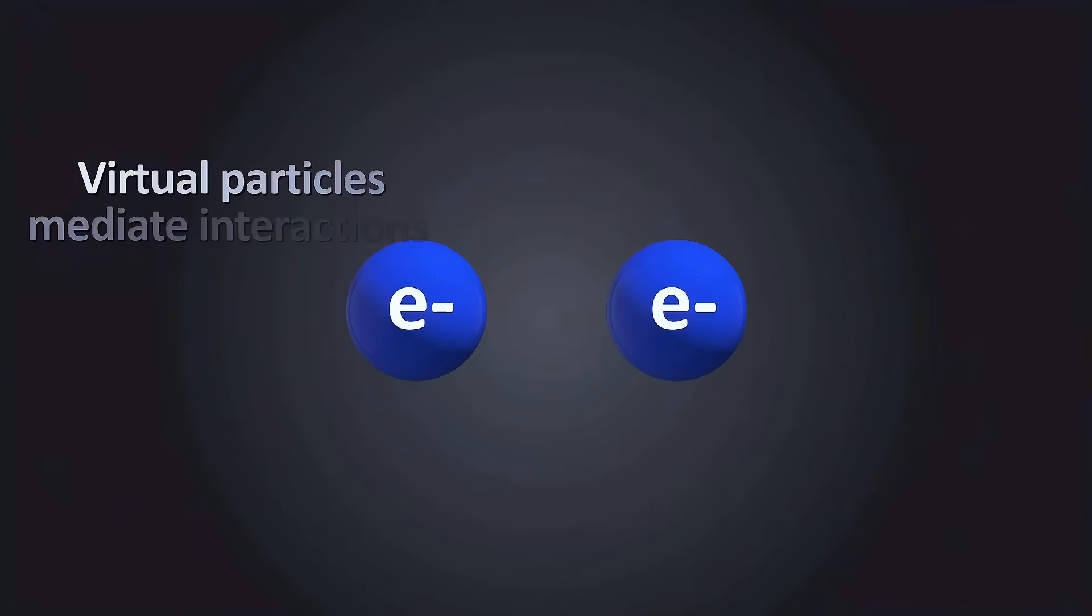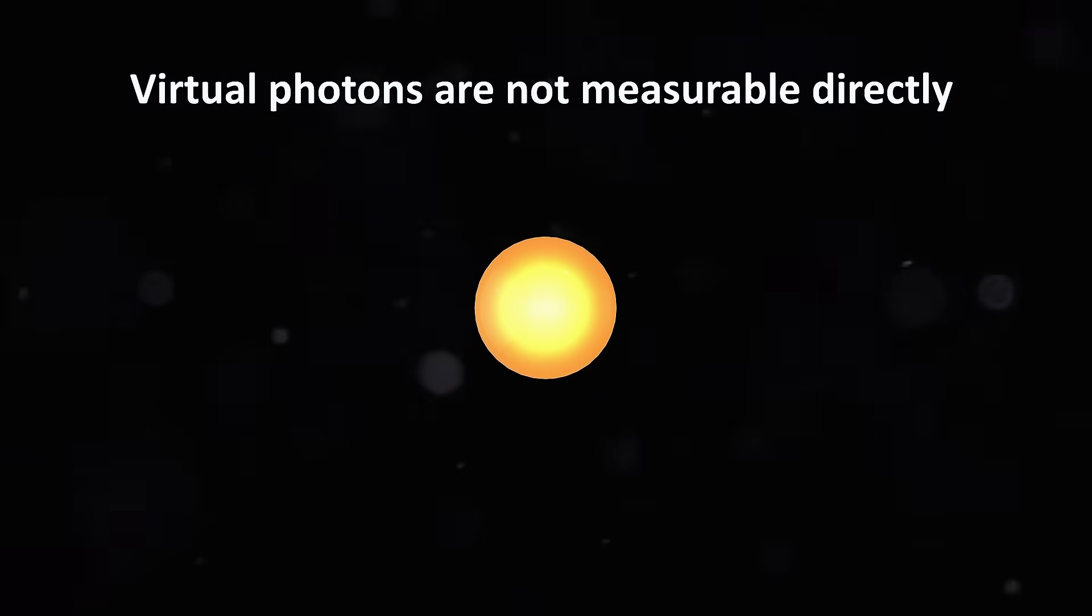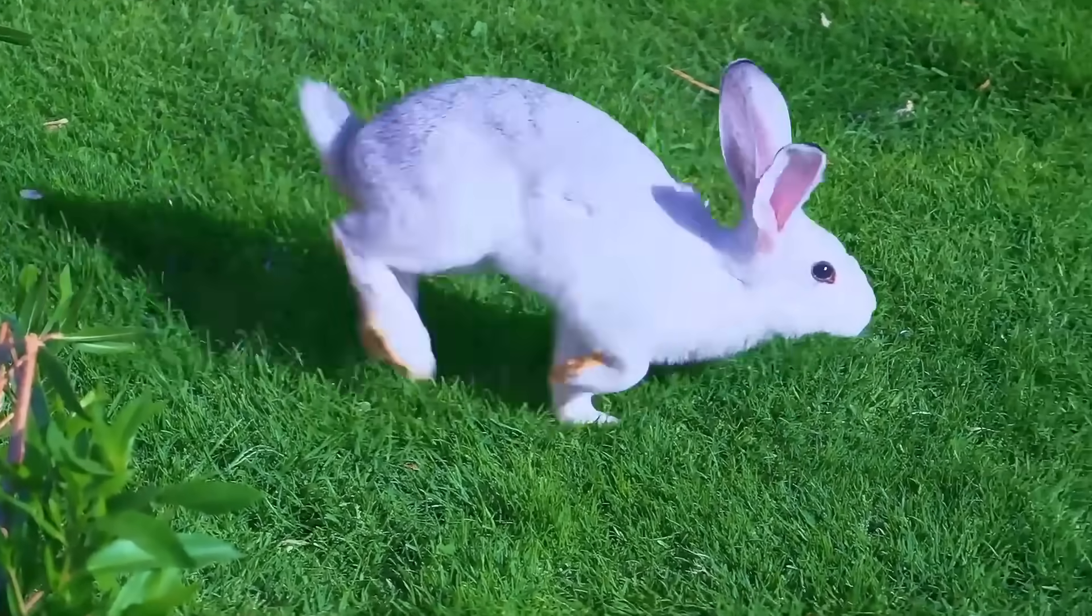But virtual particles are not just theoretical curiosities. They mediate interactions between real particles. For example, when an electron emits a virtual photon, it can interact with another charged particle, effectively causing a force. The virtual photons are not measurable directly, but we can measure their effects. Now, if you're satisfied with what you've heard so far, you don't need to watch the rest of this video, because now I'm going to go rabbit hole quantum on you. I'll explain things as deeply as I think we can go.